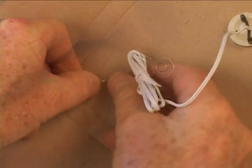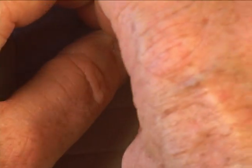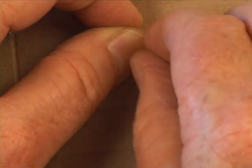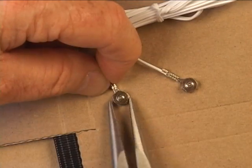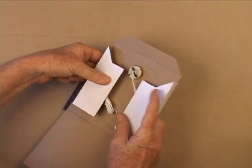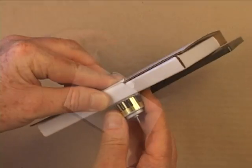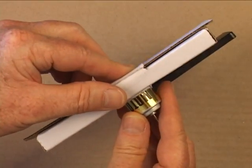Attach the motor wires to the posts on the solar cell. Replace the nuts and washers on the cell posts and screw the nuts tight. Make sure the box can be closed with the motor in place. Then open the box and add hot glue around the motor to hold it in.